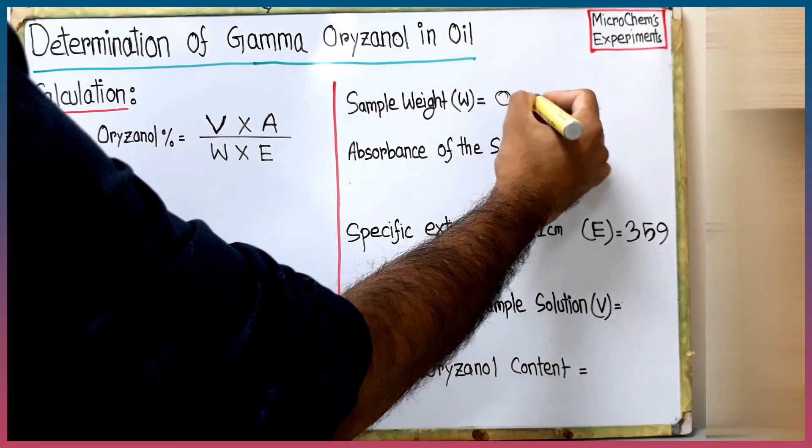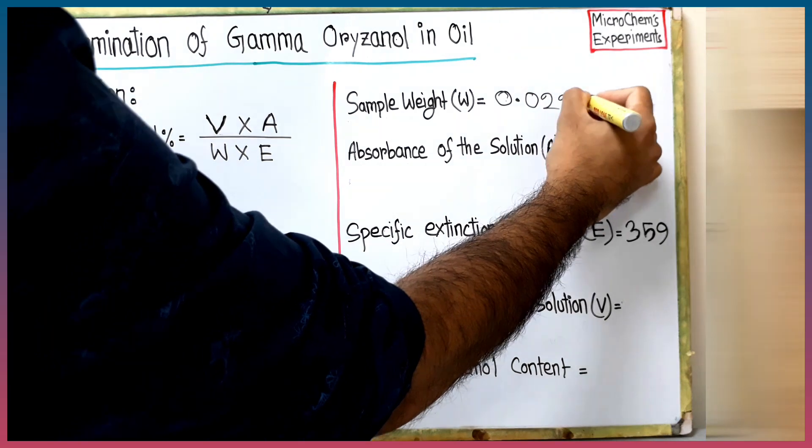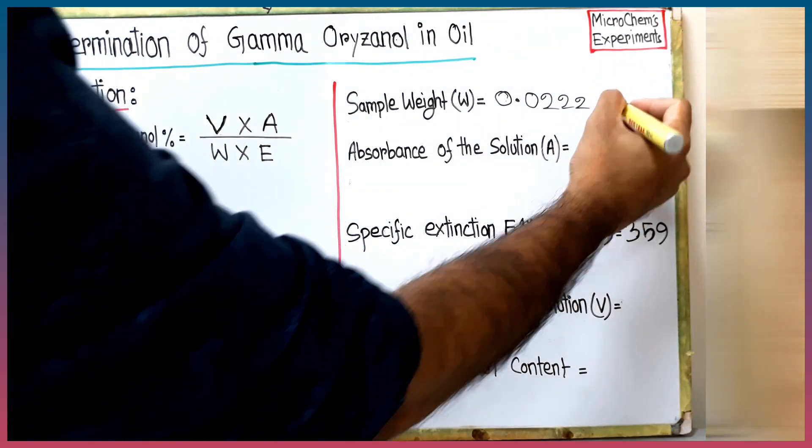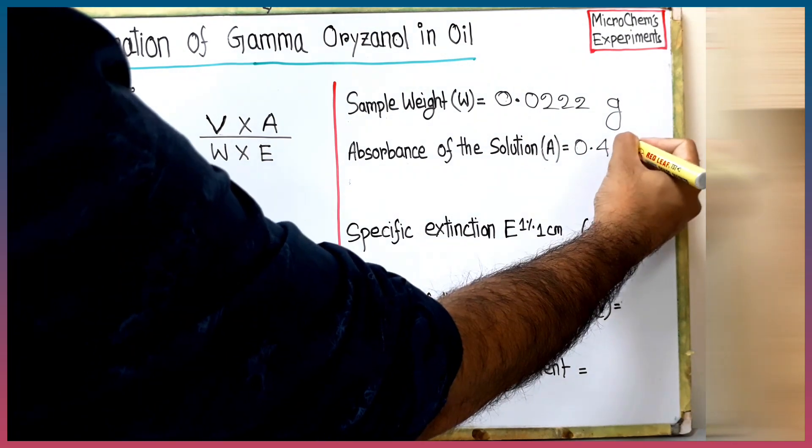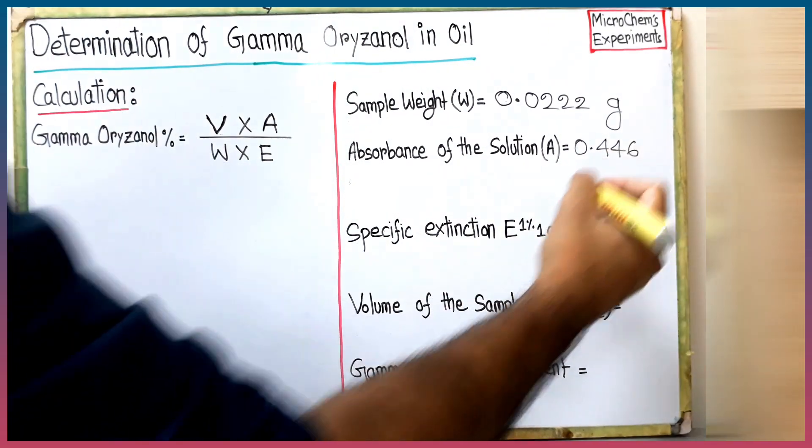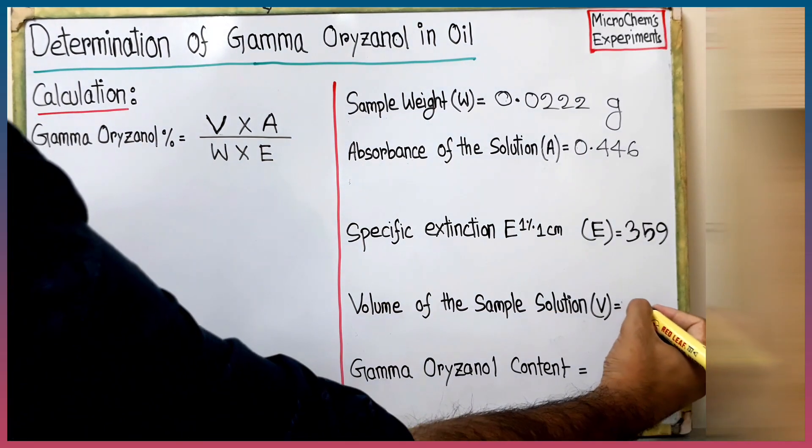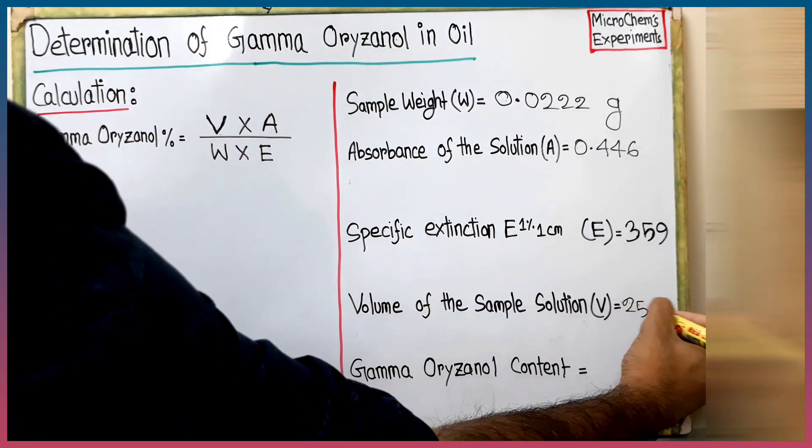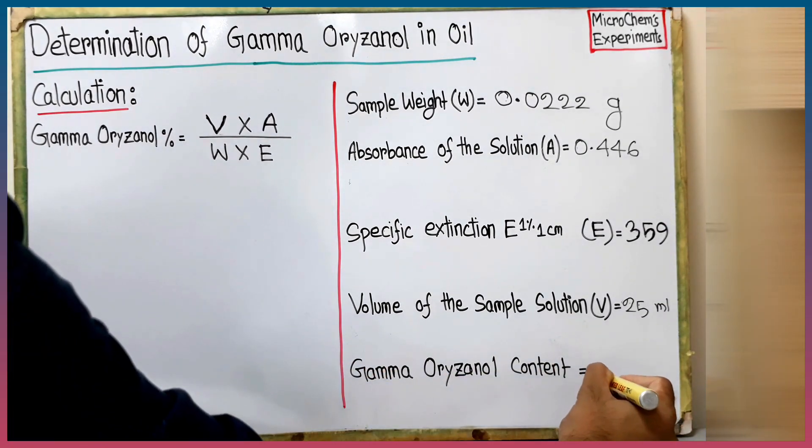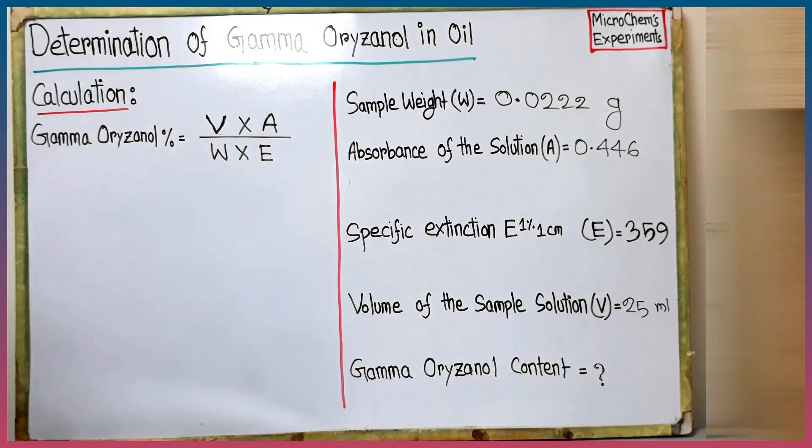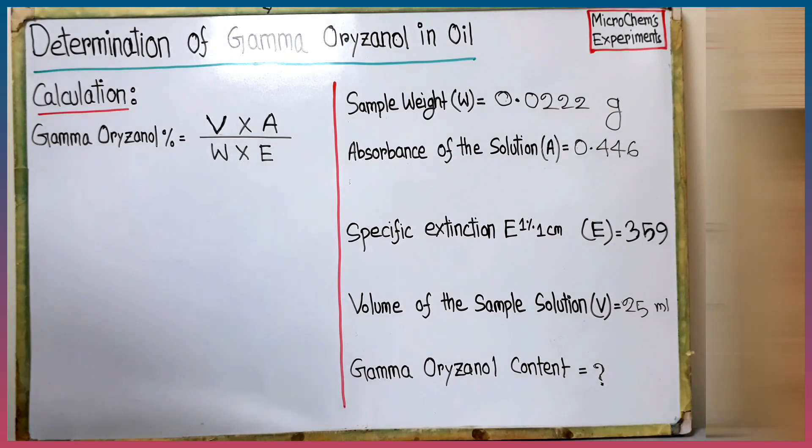Our sample weight is 0.0222 gram. Absorbance of the sample solution is 0.446. Specific extinction of the cuvette is 359. Final volume of the sample solution is 25 ml. Now we have to calculate the gamma oryzanol content using the equation given in the left side of the board.